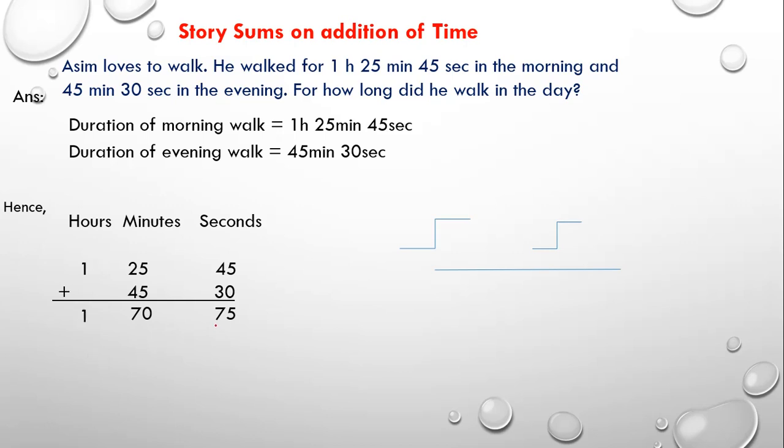After this, if you see this 75 seconds, we know that 60 seconds will make 1 minute. So, which is more than 60. Because of that, we need to convert this 75 seconds into minutes and seconds.